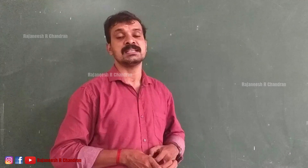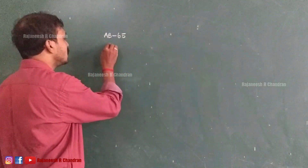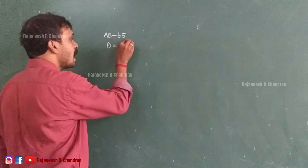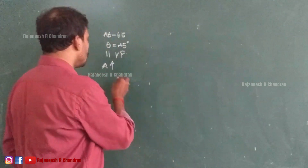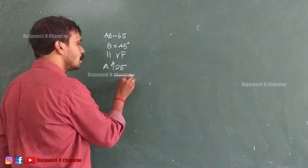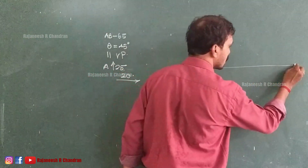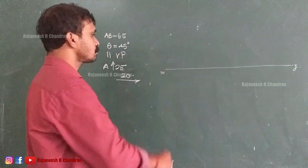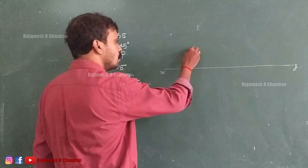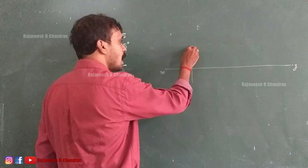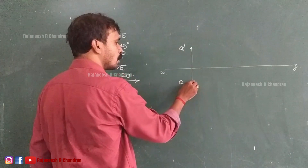The inclination with the HP is the inclination with the plane, so it is the true inclination, and since it is the inclination with the HP it is indicated with theta. So theta equals 45 degrees, and the line is parallel to VP. The point A is 25 mm above HP and 20 mm in front of VP. We can start with the XY line. At a distance of 25 above XY and 20 in front of XY we can mark a' and a. The point A has been located.